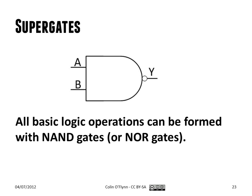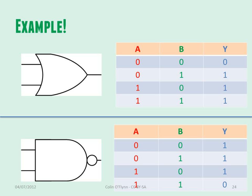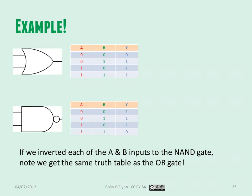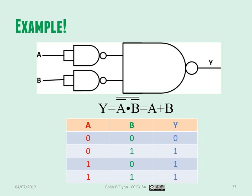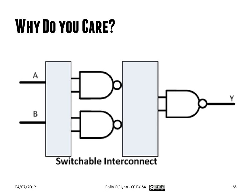The simplest example: if we connect the inputs of a NAND gate together, we form a NOT gate, because A and B will always be the same and the output is just the opposite — because of the NAND function. Similarly, you can create an OR gate. Looking at the truth tables: the OR gate output is zero only when both inputs are zero; the NAND gate output is zero only when both inputs are one. So if you invert the inputs to the NAND gate, you get an OR gate. Using three NAND gates, you can create an OR gate.